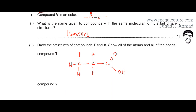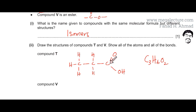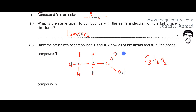The molecular formula was C3H6O2, so let's confirm: there are 3 carbons, 2 oxygens, and counting the hydrogens, there are a total of 6 hydrogens as well. So this is compound T.